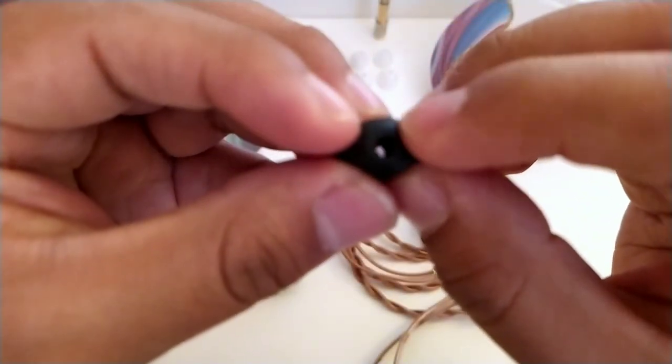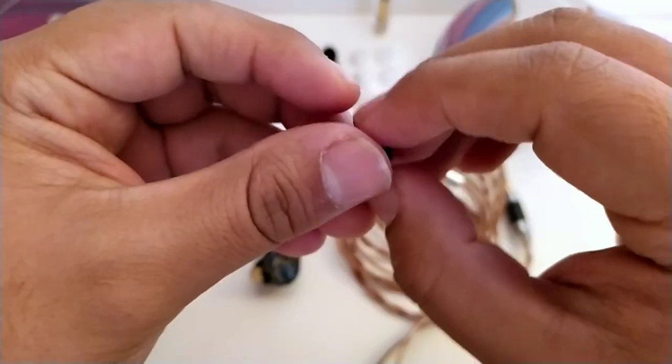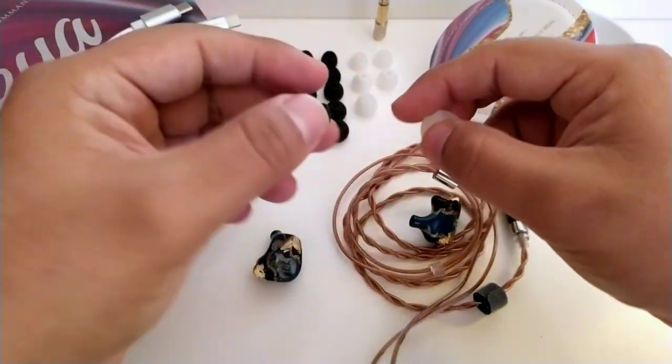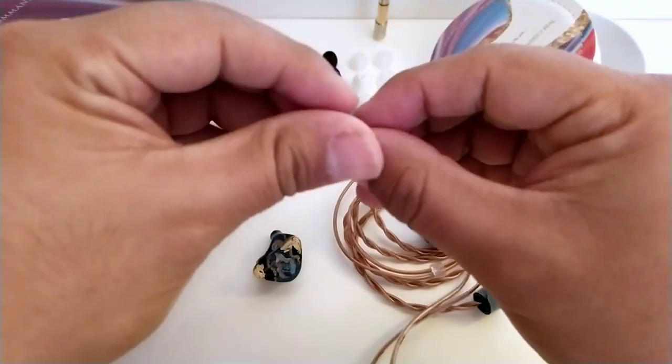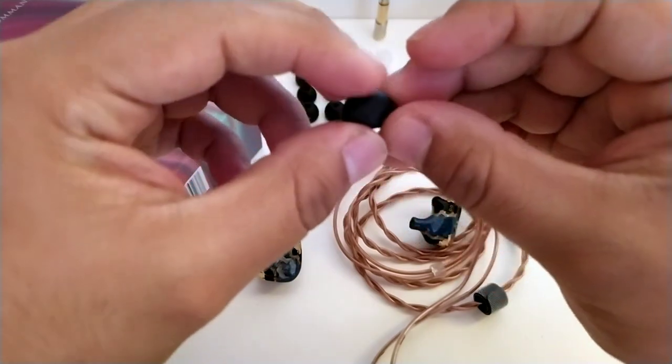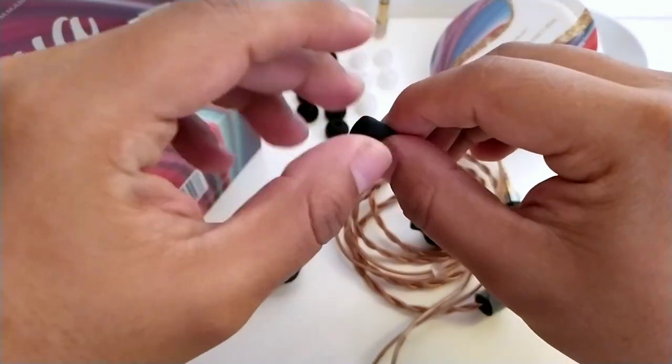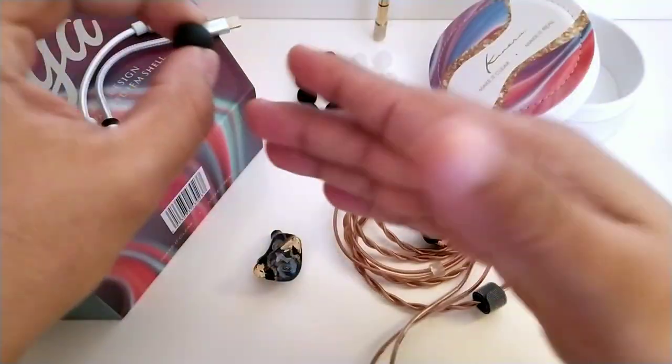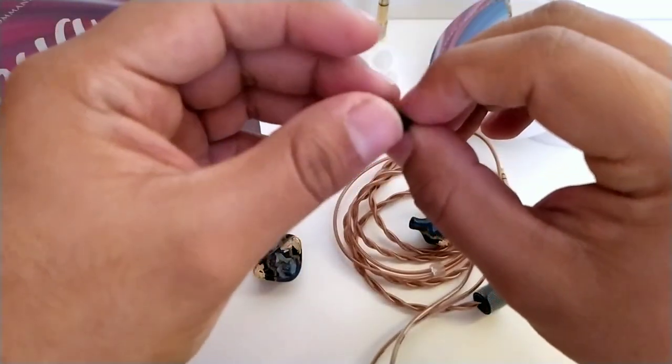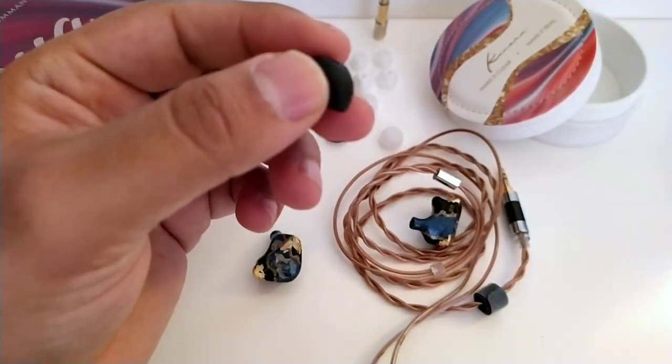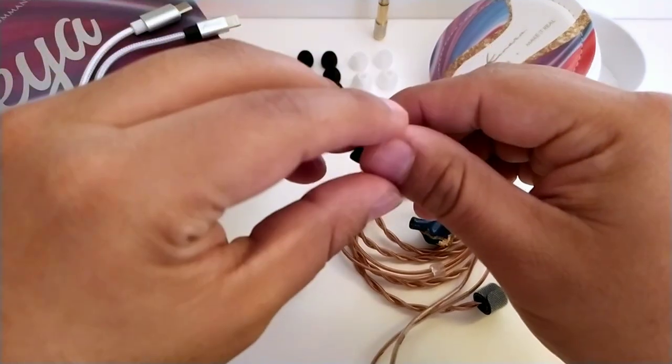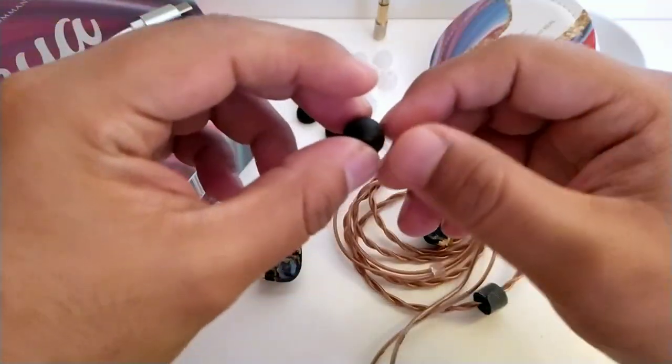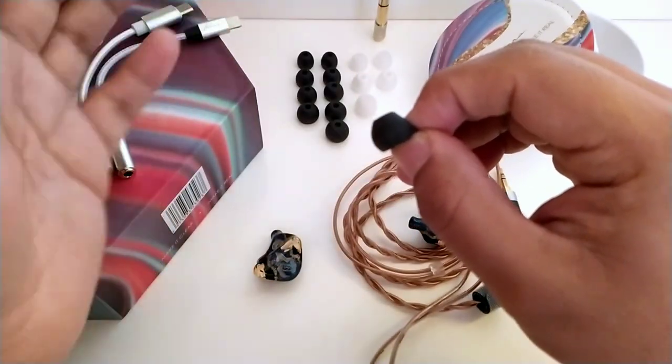La forma achatada de estos tips ayuda a que al momento de introducirlos en el canal auditivo, no se ejerza mucha presión. Esto podría ser de mucha ayuda para algunos, ya que con auriculares grandes o de boquilla prolongada, evita esa sensación molesta de presión considerable en el tímpano. Final Audio refiere que mejoran el tono de las frecuencias bajas, aumentan el aislamiento de ruido externo, y amortiguan levemente los picos de las frecuencias altas. Los cambios sonoros son muy sutiles, pero ambas son notablemente cómodas.